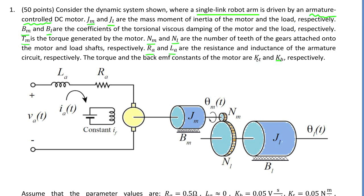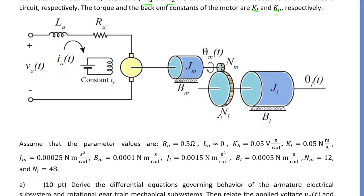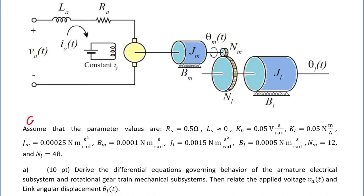KT, torque constant. KB, back EMF constant. The values of these parameters are given. Here, we ignore the armature inductance La.